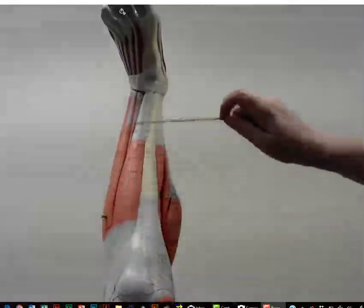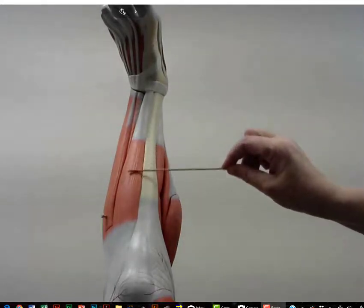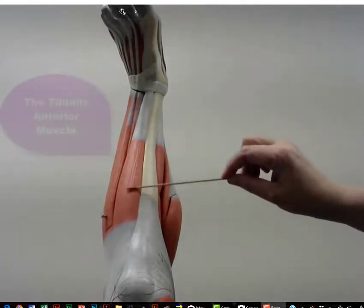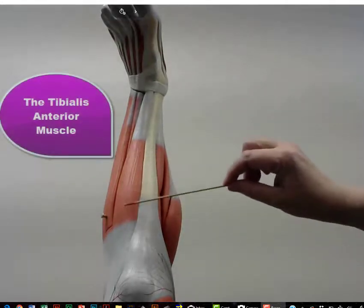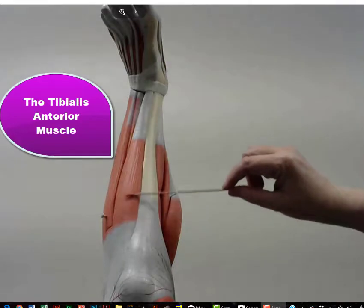You might remember that the shin bone is called the tibia. So we have a muscle that lies over the shin, which is the tibia bone. And this muscle is the tibialis anterior, the tibialis anterior.